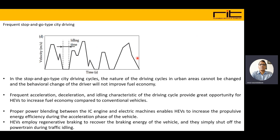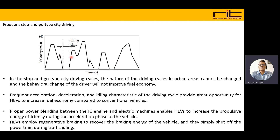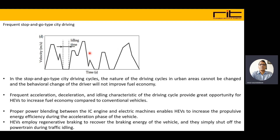Another cycle is the frequent stop-and-go type of city driving. In this urban driving cycle, the nature of driving cannot be changed and behavioural changes by the driver will not improve fuel economy — it is not possible to increase fuel economy through driving skill alone. There is frequent acceleration and deceleration, and sometimes idling periods at stops. This driving cycle provides a great opportunity for hybrid electric vehicles to increase fuel economy compared to conventional vehicles, with significant scope for regenerative braking during the deceleration periods.